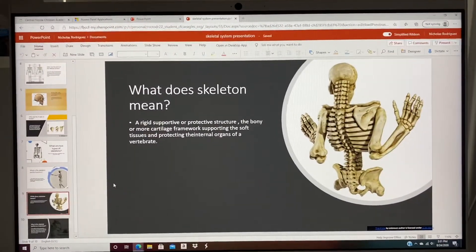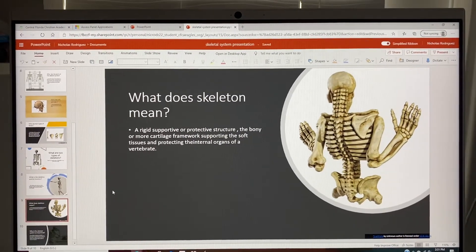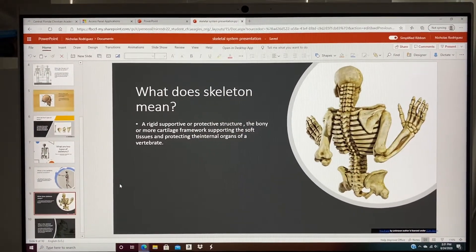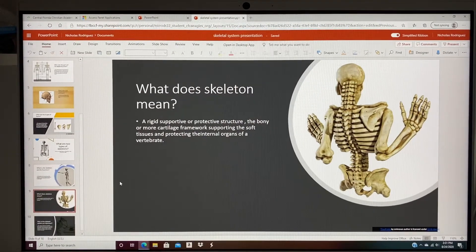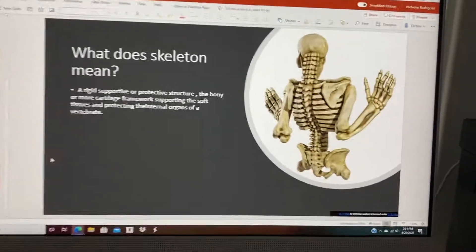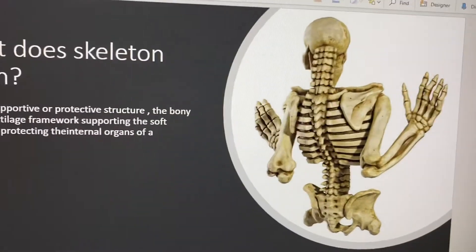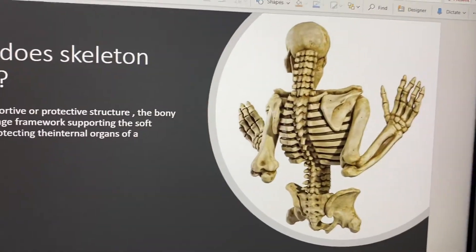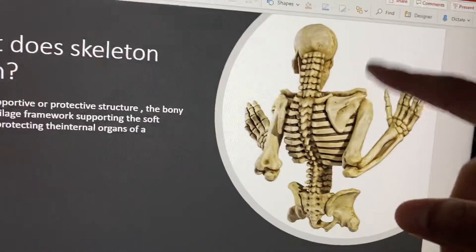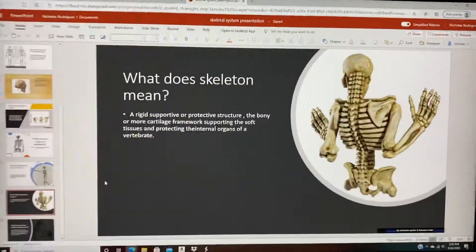What does skeleton mean? The skeleton means a rigid, supportive, or protective structure — the bony or cartilage framework supporting the soft tissues and protecting the internal organs of the vertebrae. This is a more detailed photo of the skeleton from the back point of view, where you can see the spine and all the bones in more detail.